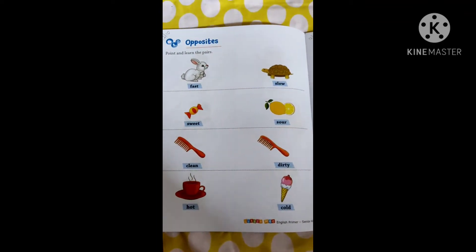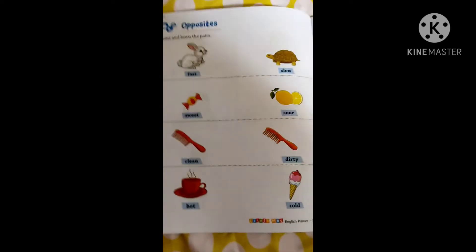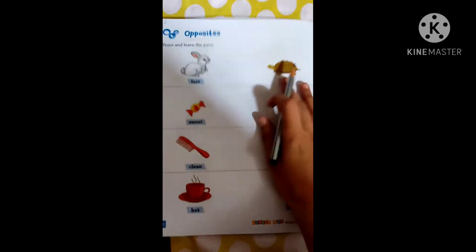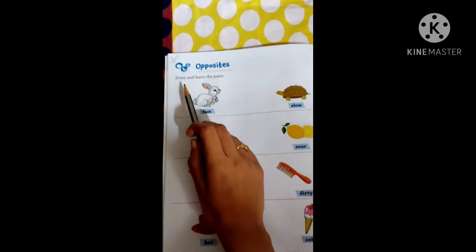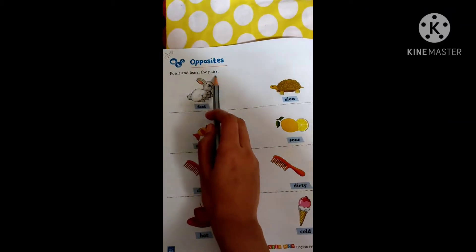Okay, so today our topic is opposites. What is that? Opposite means that will be different. Now you can see point and learn the pair.